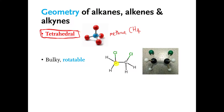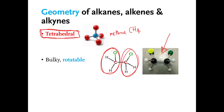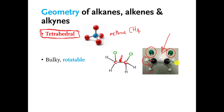If you have two carbons connected to each other, and then there are three things sticking onto this carbon and three things sticking onto the other carbon, the shape is going to look something like this. The point I want to make is that if you have a single covalent bond between the carbons, then these atoms over here and these atoms over here can rotate around like a propeller relative to each other — they can just spin around relative to each other.